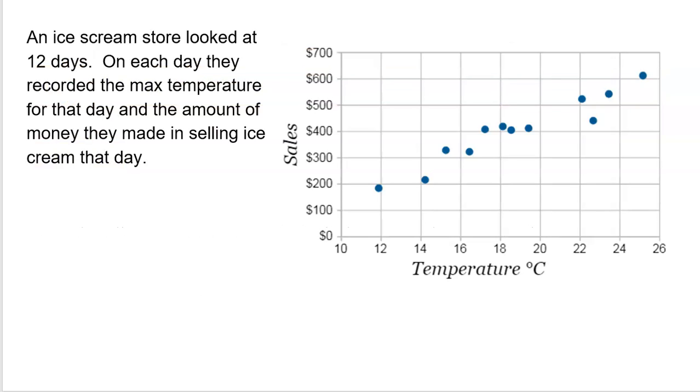An ice cream store looked at 12 days. Every day, they measured the temperature for that day, the max temperature on that day, and they also measured the amount of money they made selling ice cream. So, for example, this dot right here is one day where the max temperature was maybe just under 12 degrees Celsius, and on that day, they sold maybe like $195 worth of ice cream.